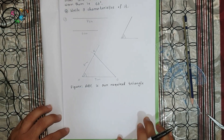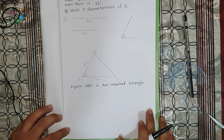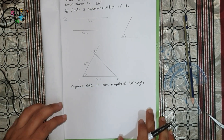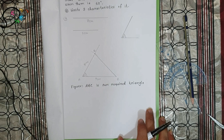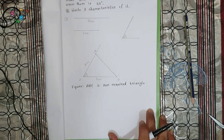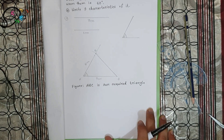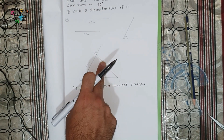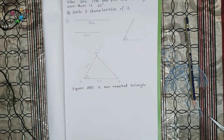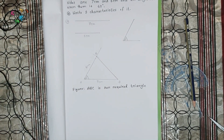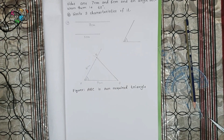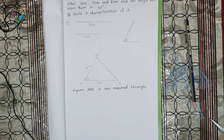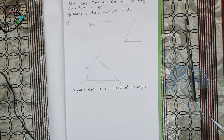Notice carefully — this triangle has no equal sides; no two sides are equal. All the sides are different lengths, and we don't know the length of the third side. So we can say this is a scalene triangle, meaning it has no equal sides.